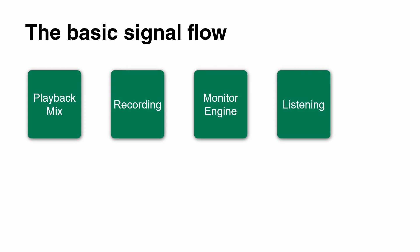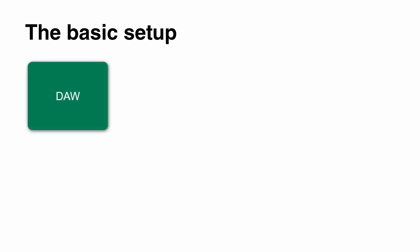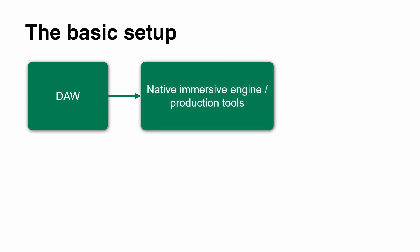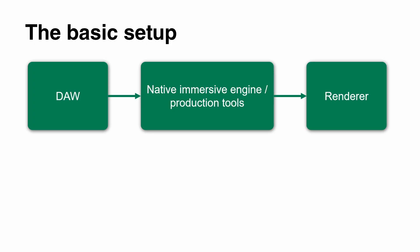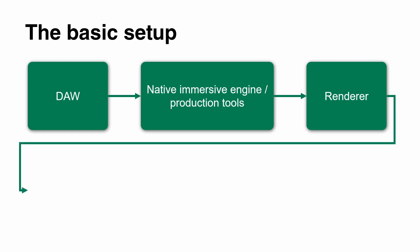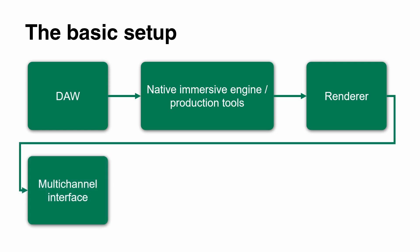It starts with your DAW, the digital audio workstation. Your Immersive Engine or your production tools can either sit on the same machine or they can be put onto a dedicated renderer machine. For example, in Dolby Atmos there's the mastering suite, which is a renderer running on a dedicated machine, connected to your multi-channel interface. That's where everything gets rendered onto physical outputs that will feed your speakers. That is, in a nutshell, the basic setup of how your studio has been designed.